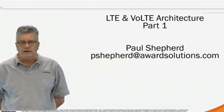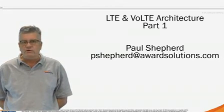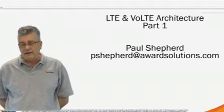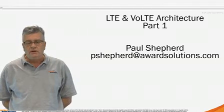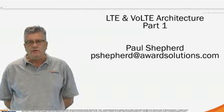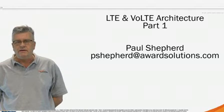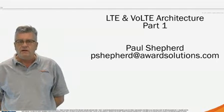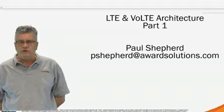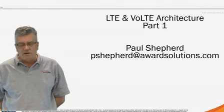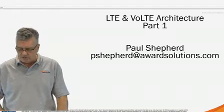We're going to start today by talking about the main components in the LTE network and in the IMS network and how they link together, and as the underpinnings to talking about how VoLTE calls get set up. In future versions, we'll go into a little bit more detail on these nodes, and we'll look at ultimately how calls get set up for VoLTE. So let's start by looking at the main components.